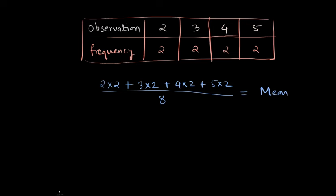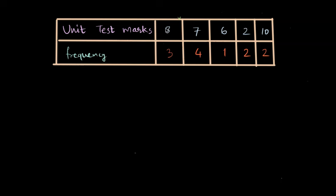Let's take a real-life example. Say we have data of unit test marks of a few students. The test scores for some students are 8, some students got 7, some got 6, 2, and 10. For each of those scores, we have frequency of how many times that score is appearing. That actually means 3 students have got 8 marks, 4 students have got 7 marks, and so on. So frequency shows the number of students who got that many marks.